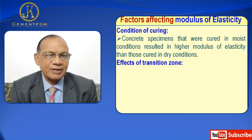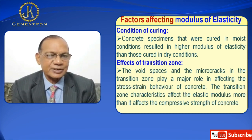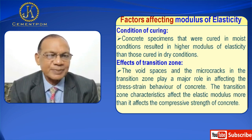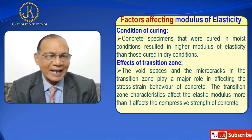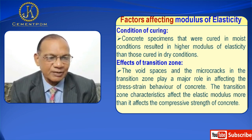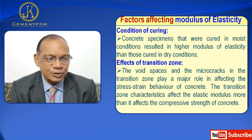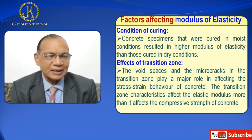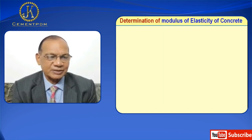Factor seven is the effect of the transition zone. The void spaces and micro-cracks in the transition zone play a major role in affecting the stress-strain behavior of concrete. The transition zone characteristics affect the elastic modulus more than they affect the compressive strength of concrete.